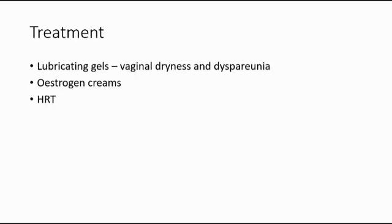For treatment of atrophic vaginitis, we can give lubricating gels to treat vaginal dryness and dyspareunia. We can also give oestrogen creams, or hormonal replacement therapy can be done if there are also other postmenopausal symptoms.